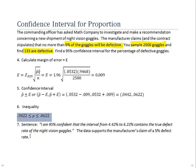Then we conclude by summarizing our findings in a single sentence. In this case we would say: I'm 95% confident that the interval from 4.42% to 6.22% contains the true defect rate of the night vision goggles. Now notice in my summarization I switched from expressing P as a decimal, 0.0622, to a percentage. When we do the mathematics we have to have P expressed as a decimal when we use it in our formulas.